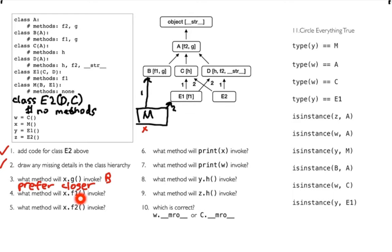The next one: I'm calling x.F1. There are two F1s — I could call the B version of F1 or the E version. The answer is again we prefer the B version. Why? Because B is our favorite parent, and left parents are preferred over right parents. So we're going to go that route — we prefer left as we're going up this hierarchy.